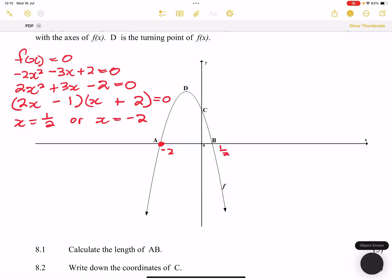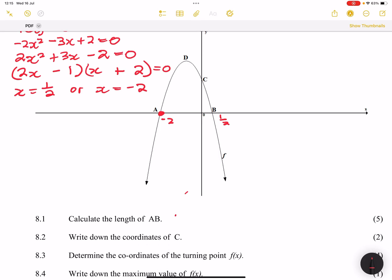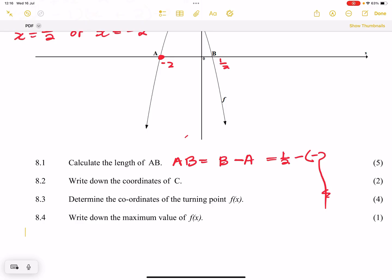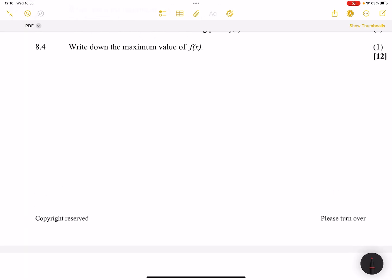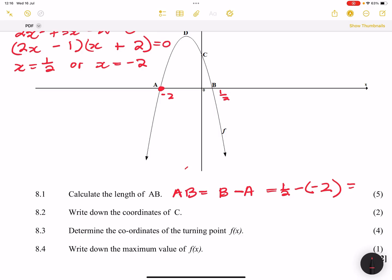So if it's a horizontal line, it means the distance AB will be the difference between the x values. So AB will simply be B minus A, and so that's 1/2 minus a negative 2. And so this will give us 2.5 units. Remember, we're looking for the distance, and so that would be 2.5 units.